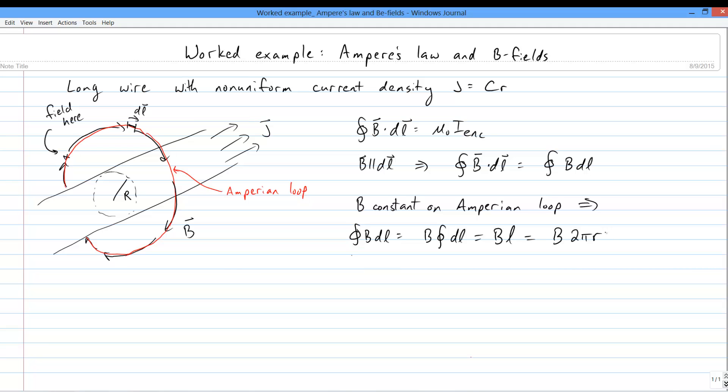And we can pull it outside the integral. Integral DL gives L, which is the length of the Ampereian loop, 2 pi times little r. So now the left-hand side of Ampere's law is dealt with. Next up is to handle the right side, by calculating the current enclosed by the loop.